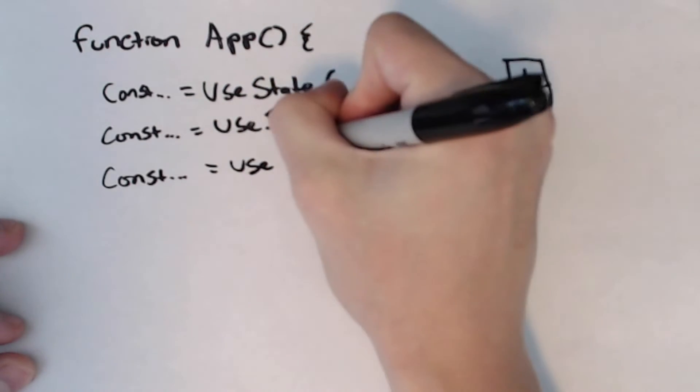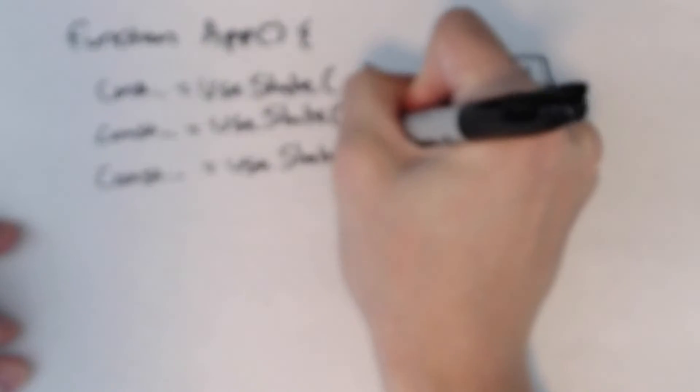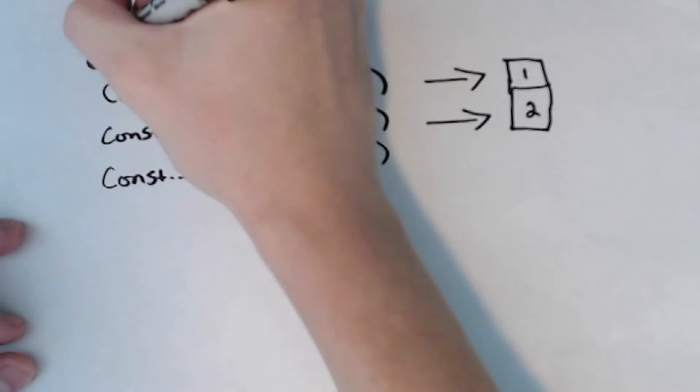If you do a third useState call and you assign that to some state and call it foobar or something, React has no idea what you've called that.